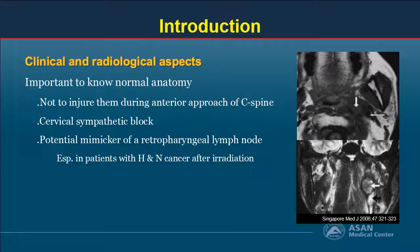In the radiologic aspect, there was a case report of an enlarged cervical sympathetic ganglion after therapeutic radiation, which was misdiagnosed as metastatic lymphadenopathy at the time of diagnosis. It could be a potential mimicker of a retropharyngeal lymph node, especially in patients with head and neck cancer after cervical irradiation.